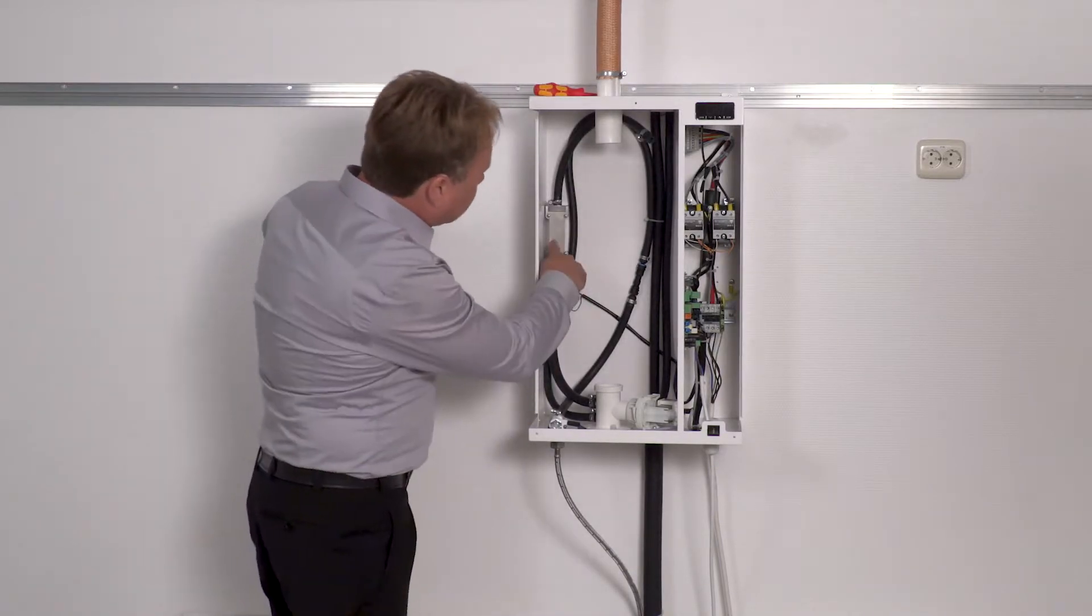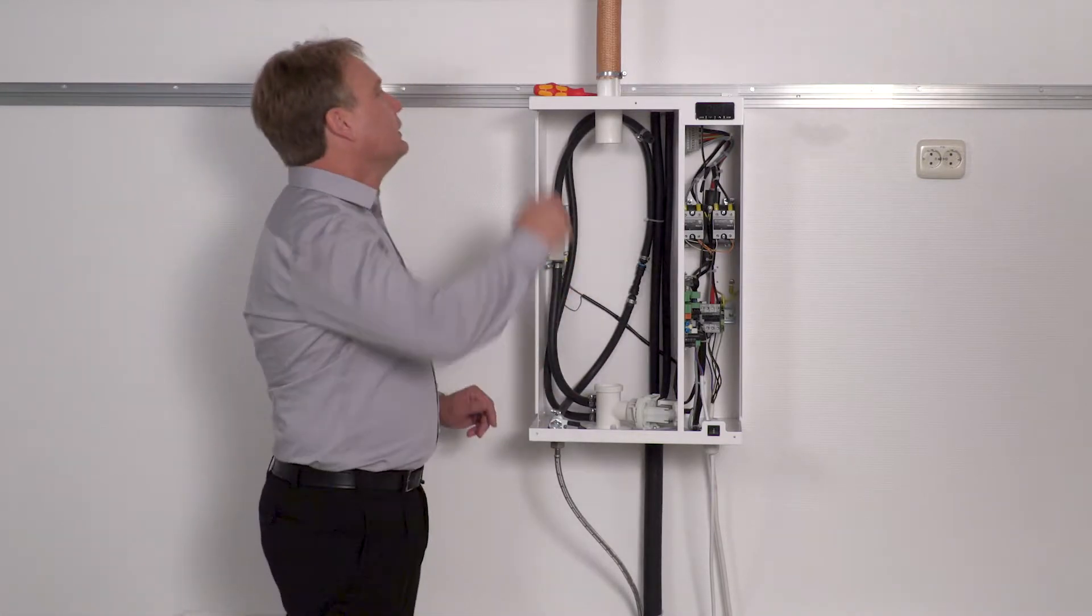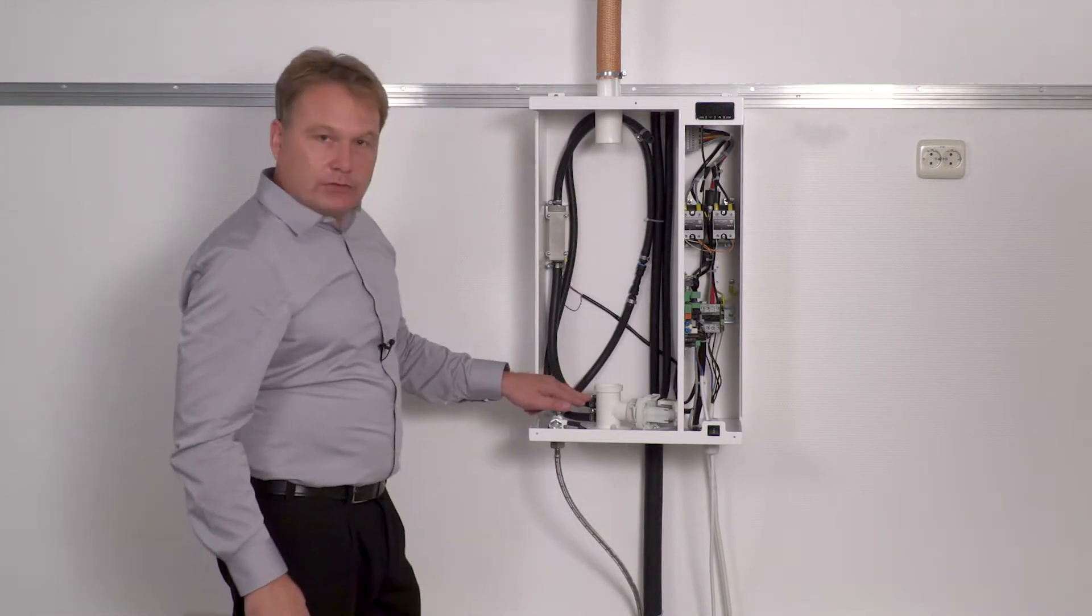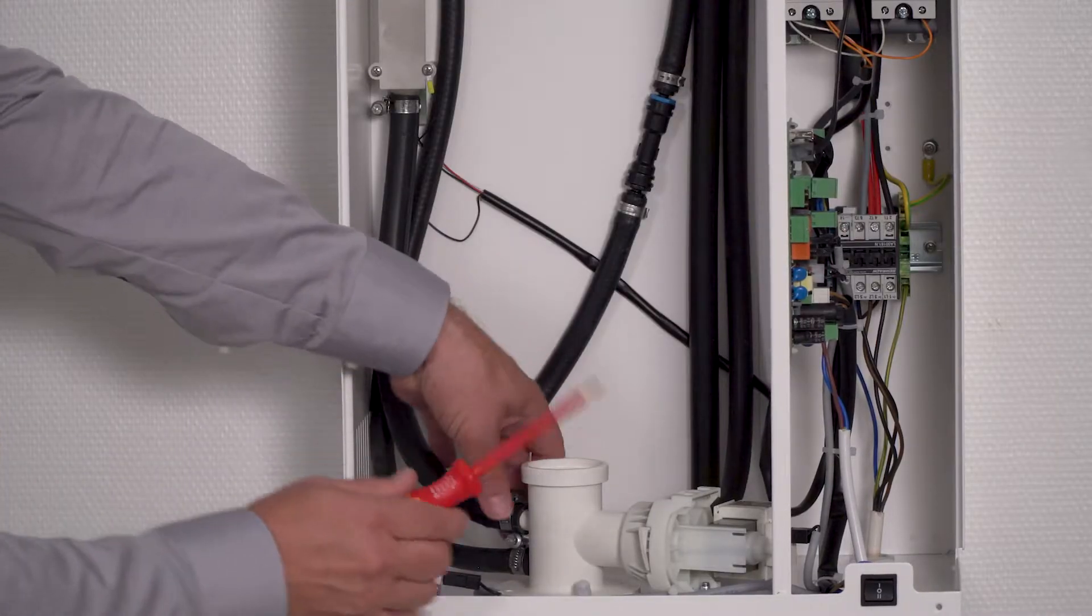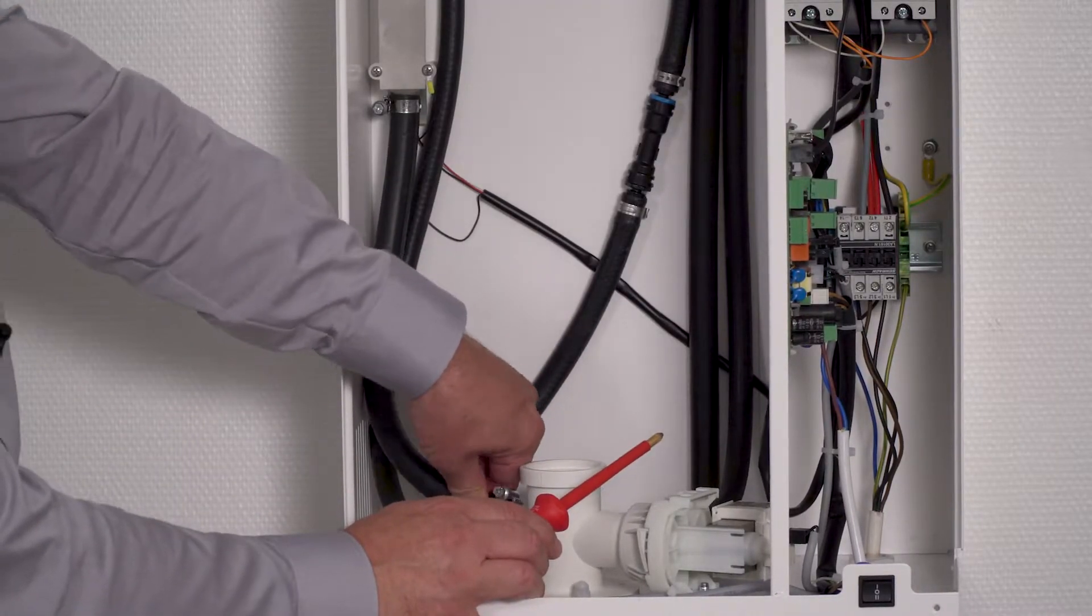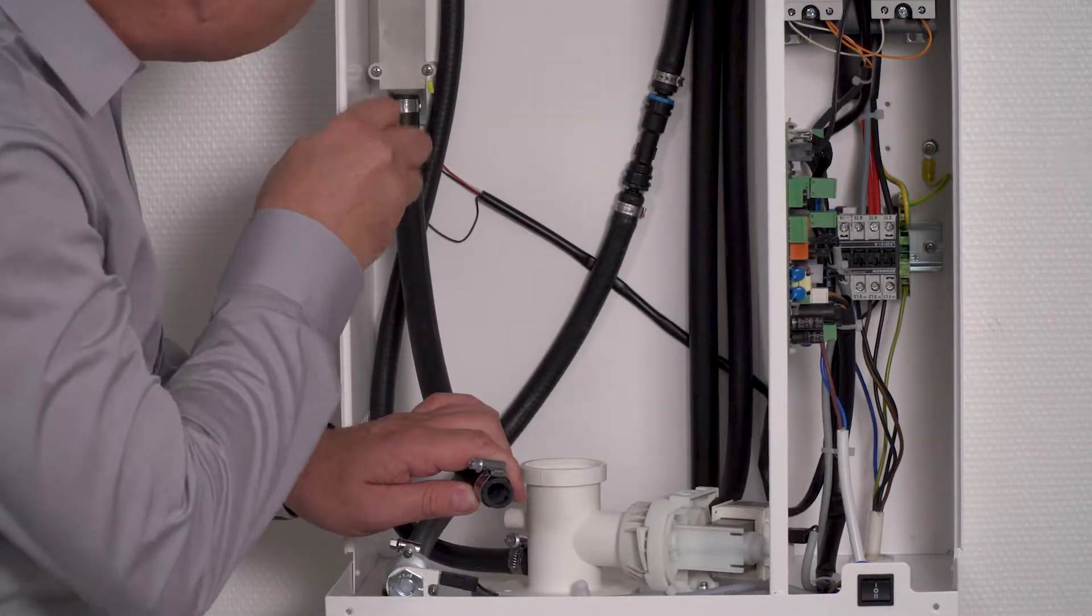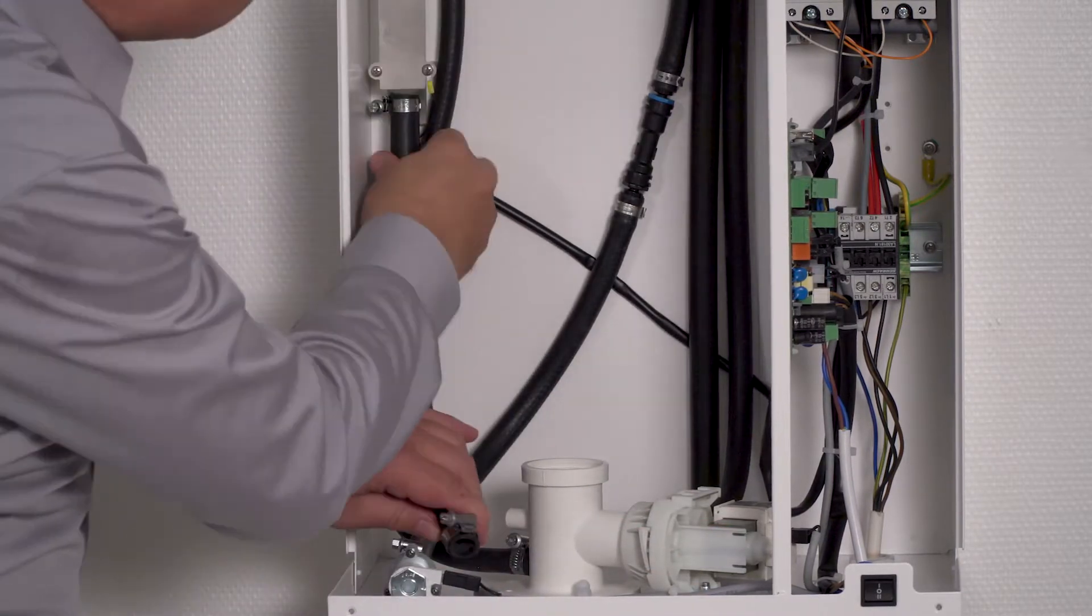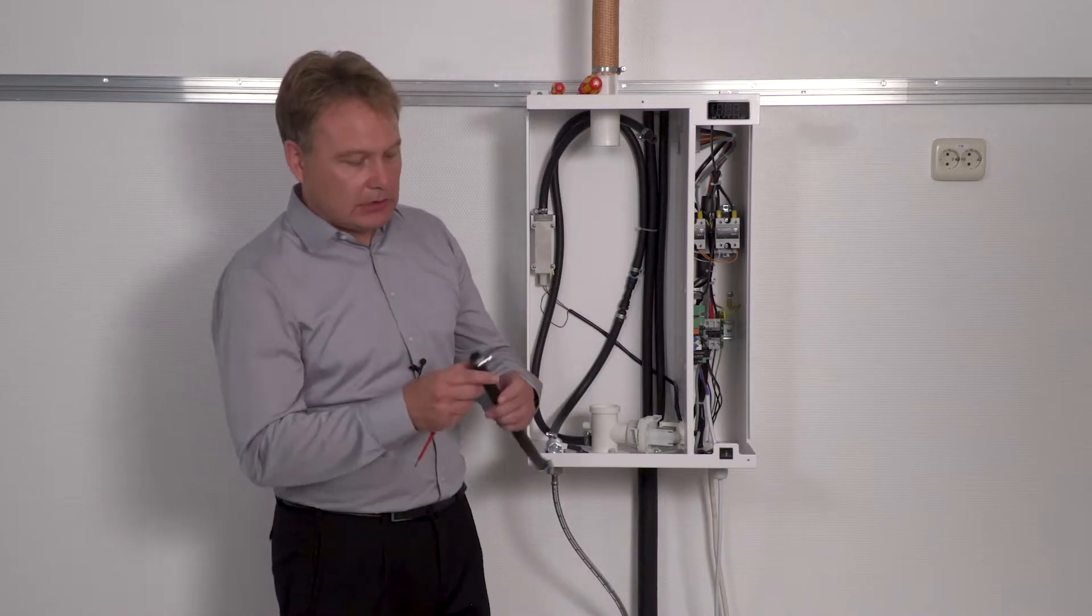Then I check the water level control next for blockages. I remove the hose at the cylinder base here. I loosen the clamps here, pull them off. Up here too.